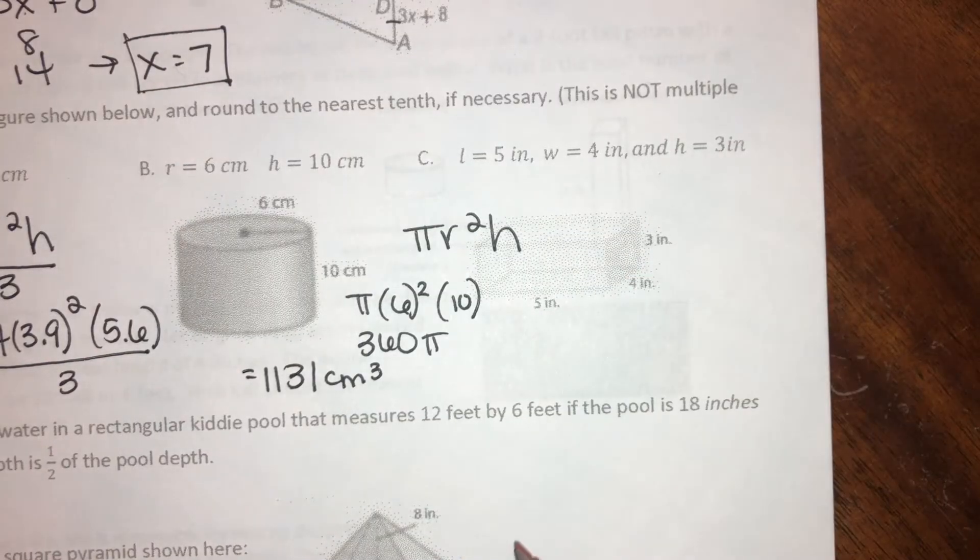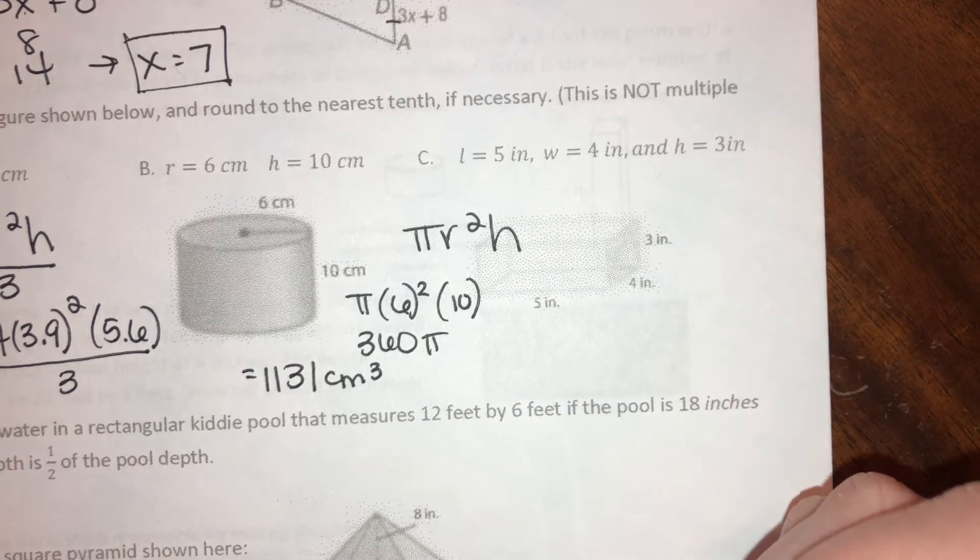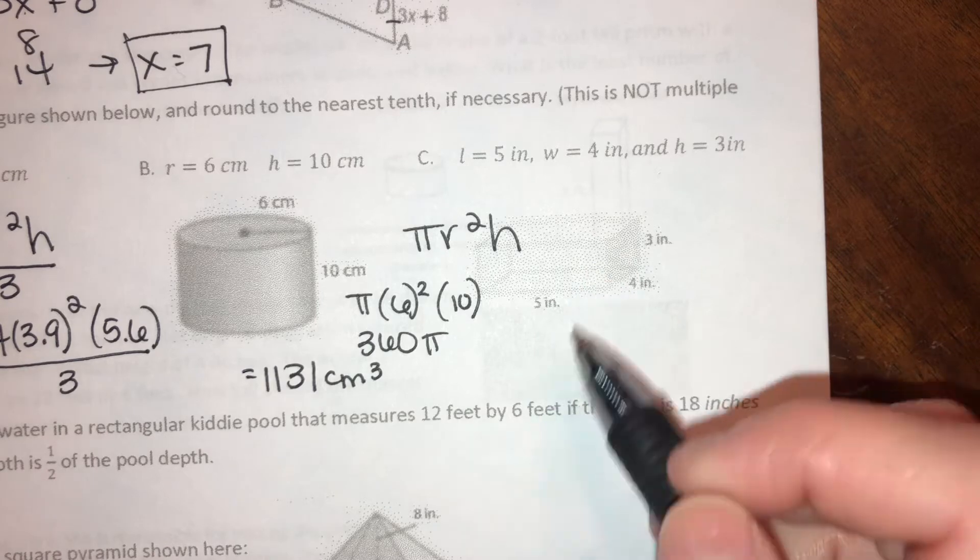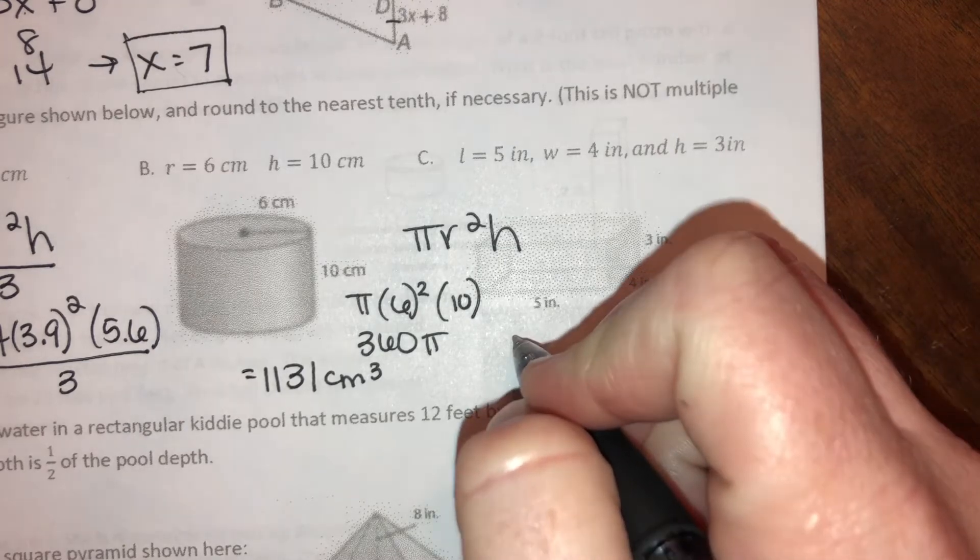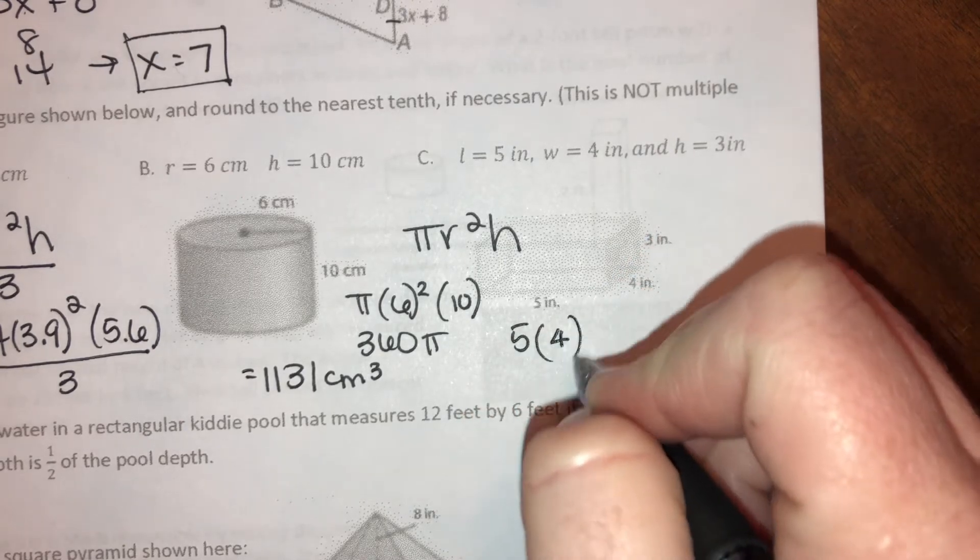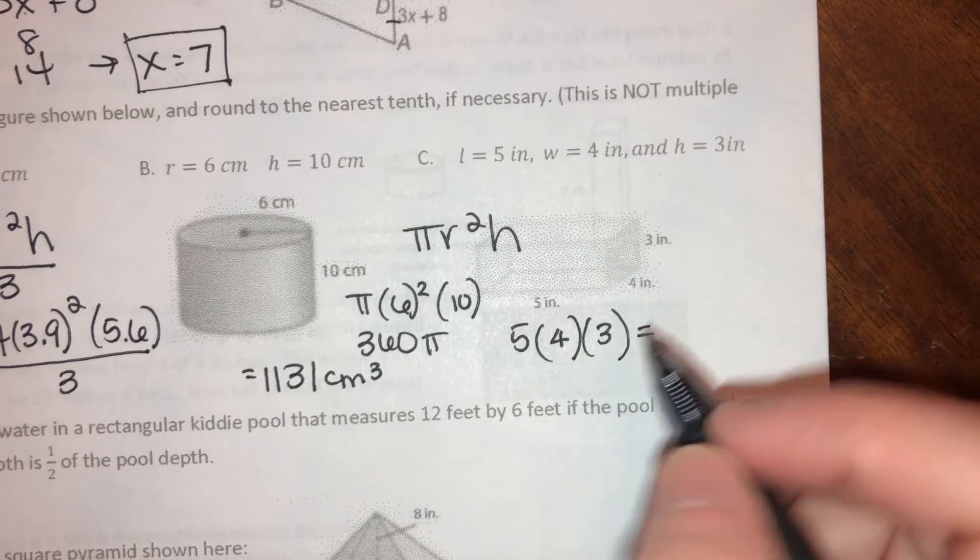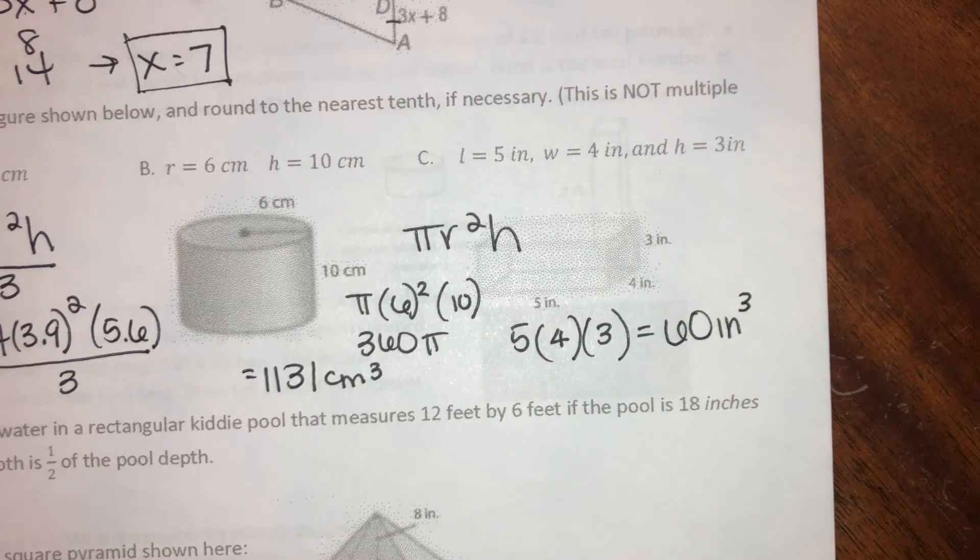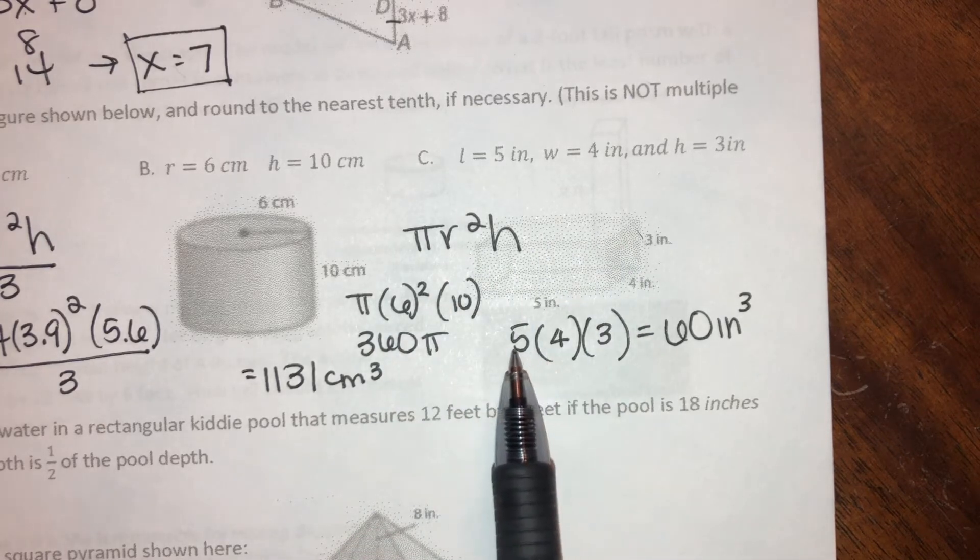And then I kind of wrote over this last one here. This looks like a box, right? A, what am I trying to say? Prism. A rectangular prism. So here, length times width times height is gonna give us our volume. So that's 5 times 4 times 3. And that's in inches. 5 times 4 is 20. 20 times 3 is 60. So that's 60 cubic inches. 60 inches cubed.